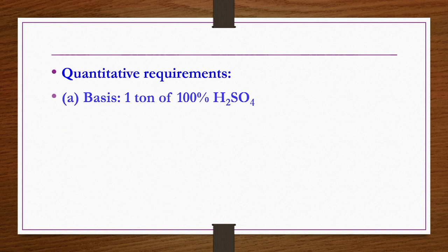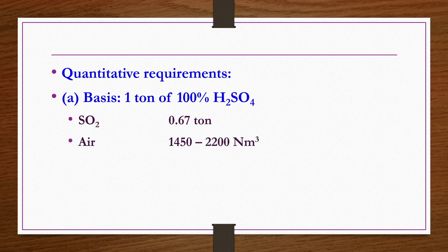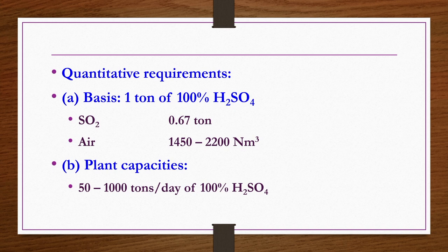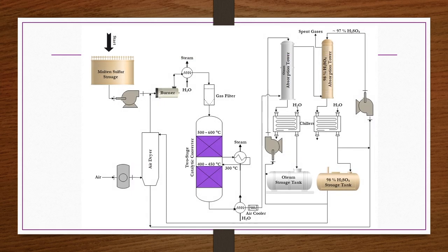Quantitative requirements: to produce 1 ton of 100 percent sulphuric acid, you need 0.67 tons of sulphur dioxide and 1,450 to 2,200 normal cubic meters of air. Plant capacities vary between 50 to 1,000 tons per day of 100 percent pure H2SO4.